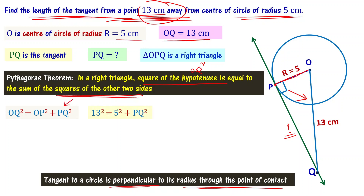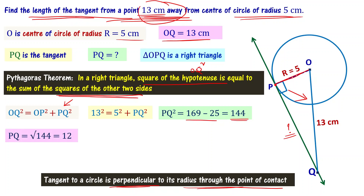13 squared is 169, 5 squared is 25, so PQ square equals 169 minus 25, which equals 144. Therefore PQ equals the square root of 144, which is 12. The length of the tangent PQ equals 12 centimeters. This is the answer we are looking for.